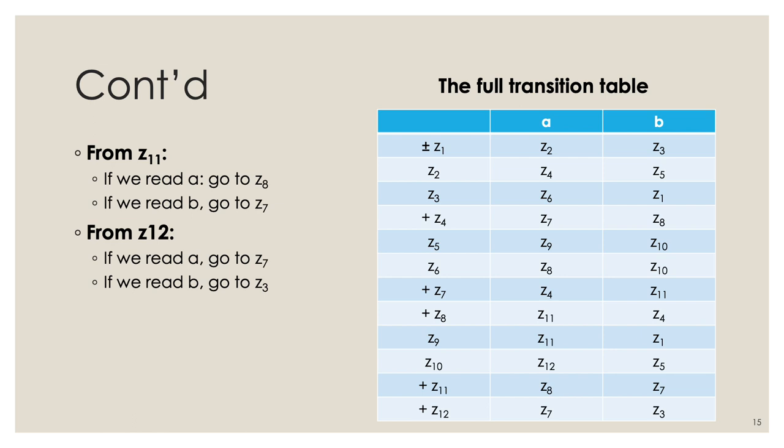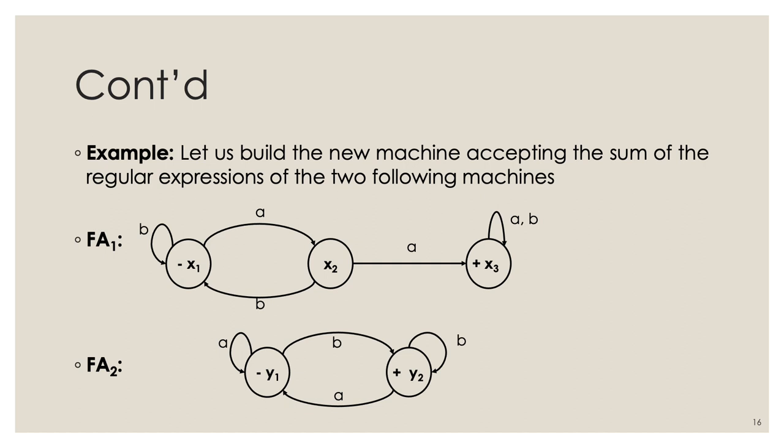Let's look at another example: building the new machine accepting the union of two regular expressions. FA1 accepts strings containing two consecutive a's (double-a). FA2 accepts strings that end with 'b'.